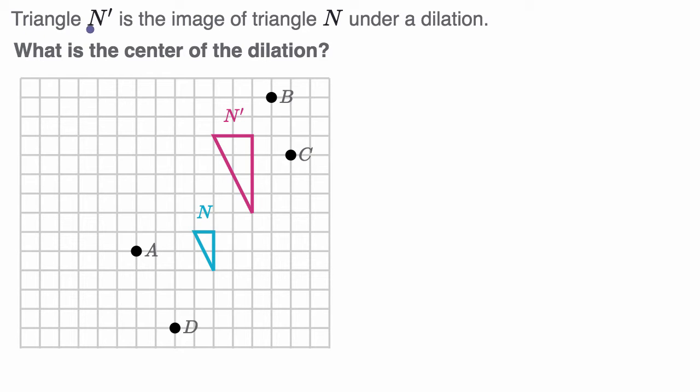We are told that triangle N prime is the image of triangle N under a dilation. So this is N prime in this red color and then the original N is in this blue color. What is the center of dilation?